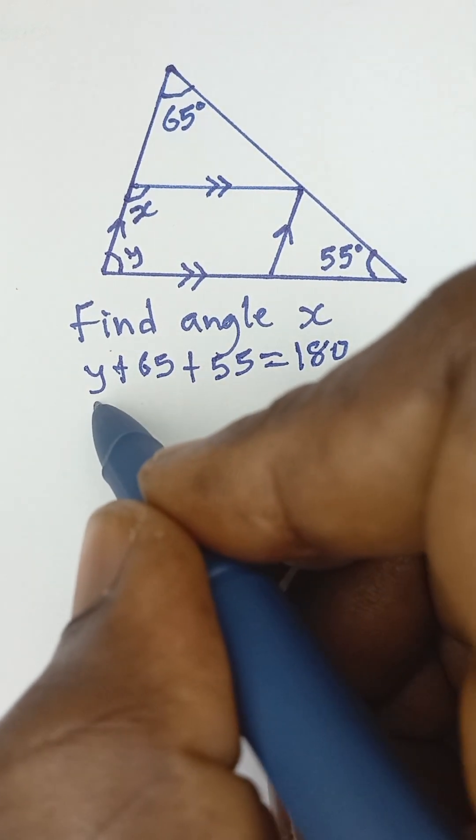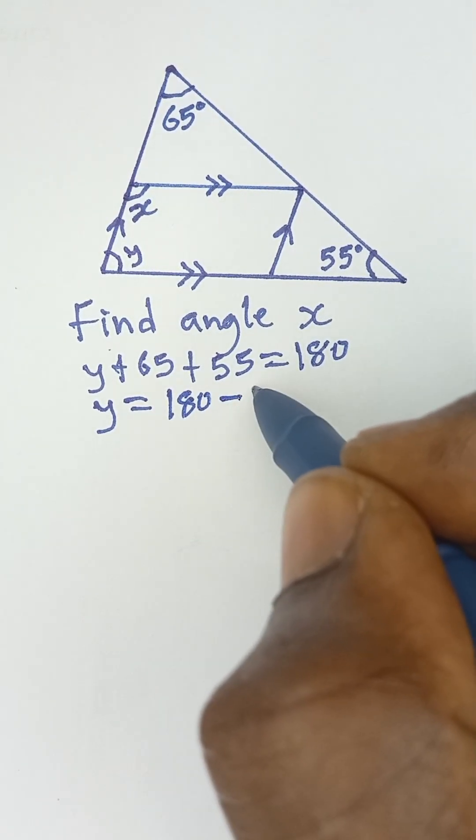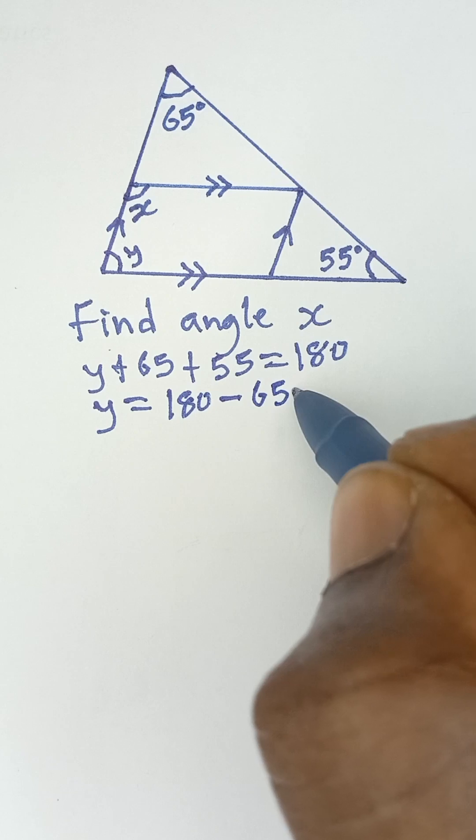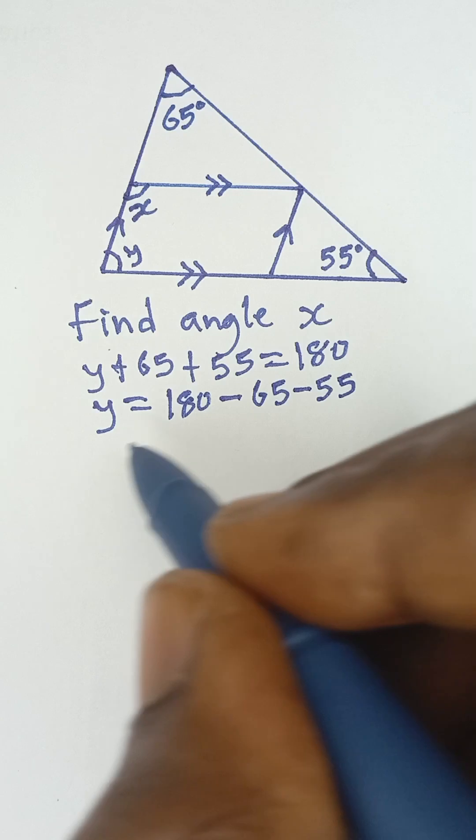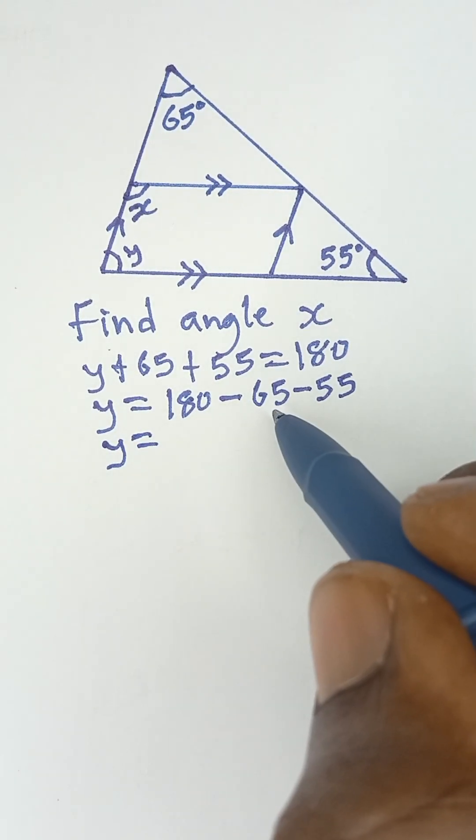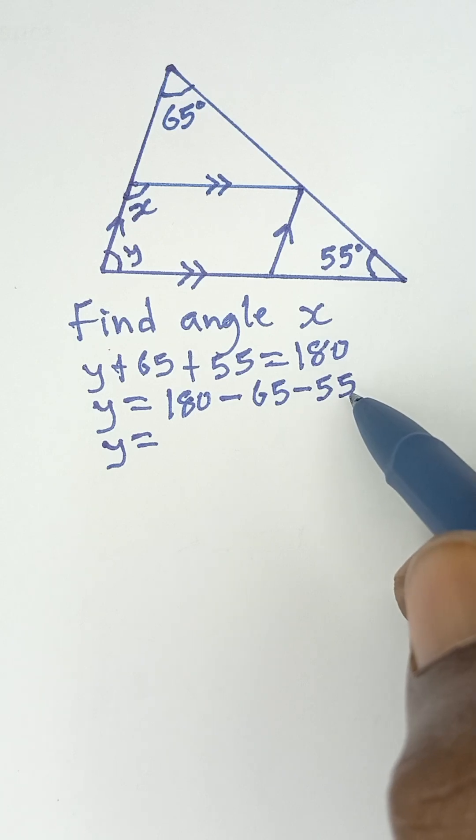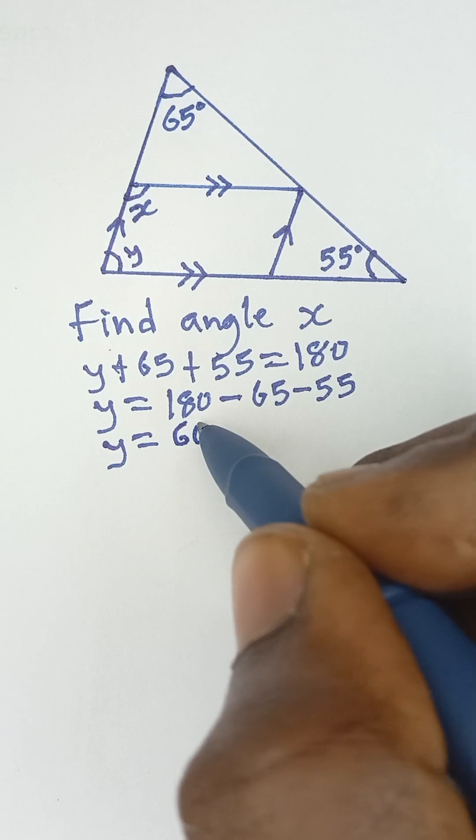So angle y will simply be equal to 180 minus 65 and then minus 55. When these two values go to the other side they become negative, and that will give us y equals 180 minus 65, which gives us 115, and then 115 minus 55 simply gives us 60. So we have y as 60 degrees.